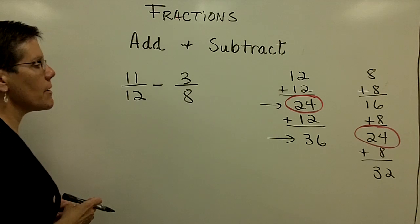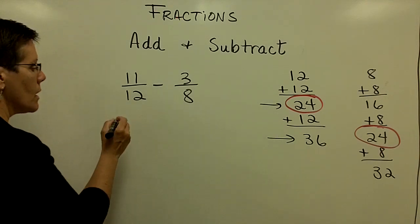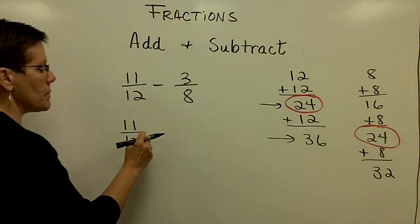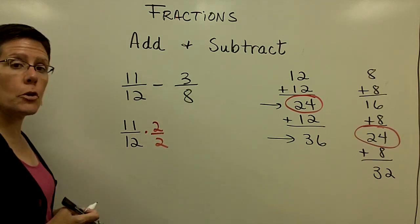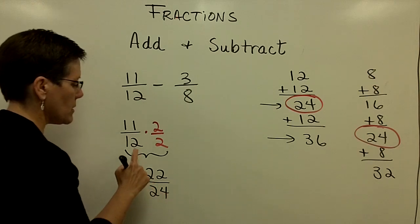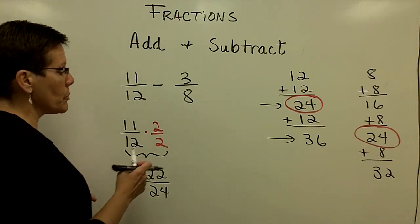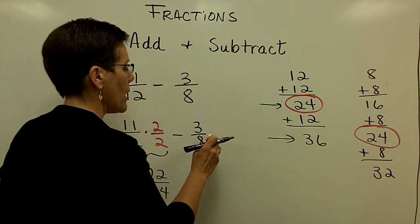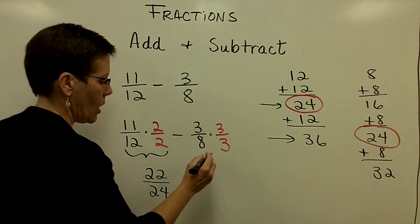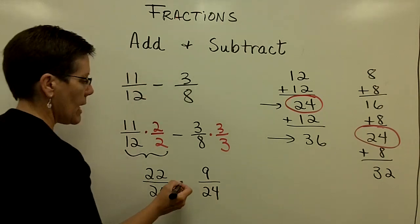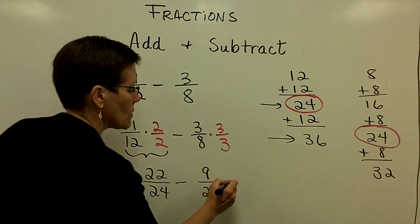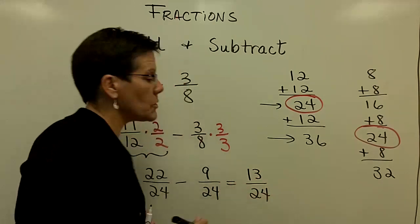I could also have broken those into their prime factorizations and taken the prime factors the greatest number of times they occur in any one denominator. Continuing with this problem: I want 12 to become 24, so I multiply by 1 in the form of 2 over 2. That fraction becomes 22 over 24. Don't reduce that — you're creating it on purpose. The fraction 3 eighths is multiplied by 3 over 3, giving a numerator of 9 and a denominator of 24. Subtracting the numerators: 22 minus 9 is 13 over 24, and you're done.